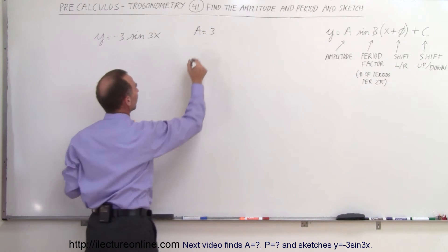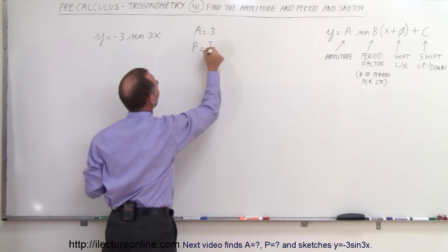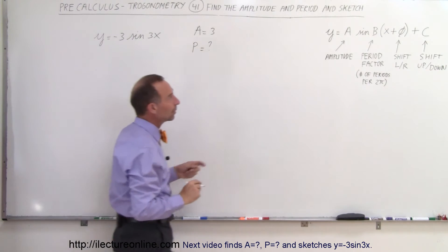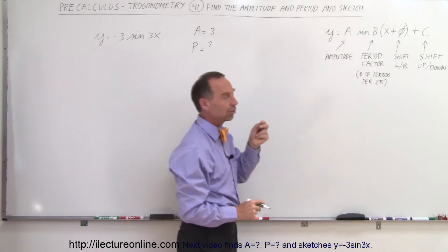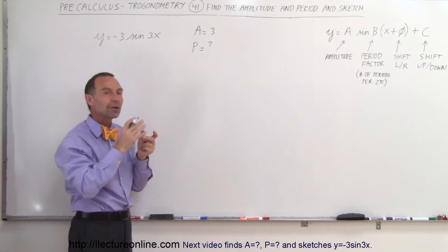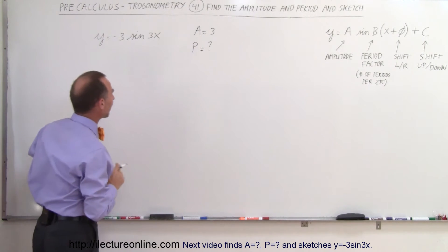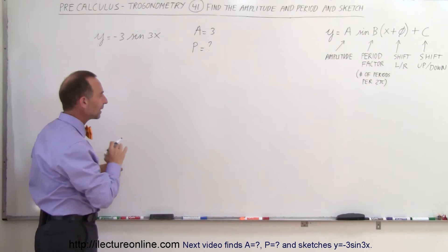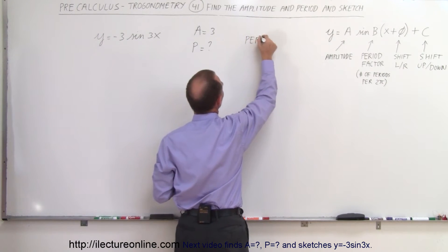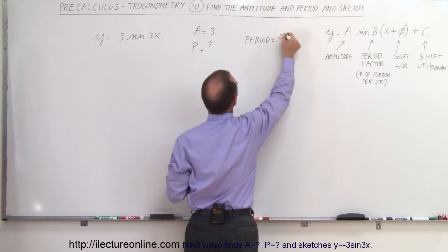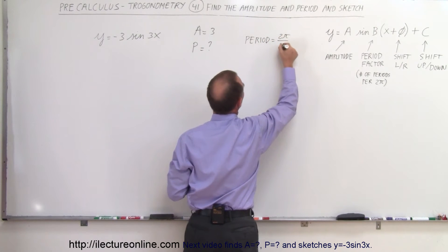What about the period? The period is equal to question mark. Well let's go over here, the number in front of the X is called the period factor. It determines how many periods per 2 pi on the x-axis. So another way to think about it is that the period can be found by taking 2 pi divided by B.